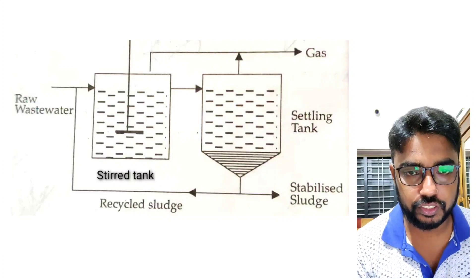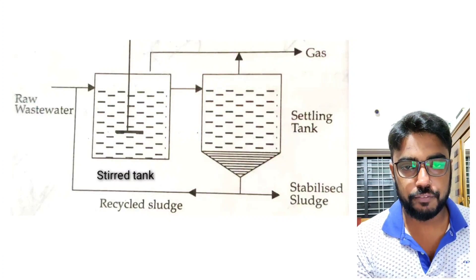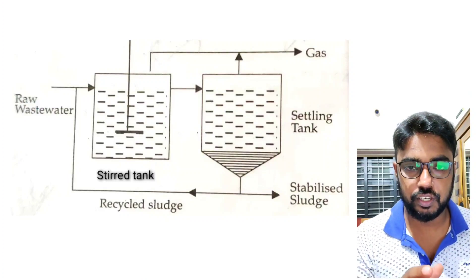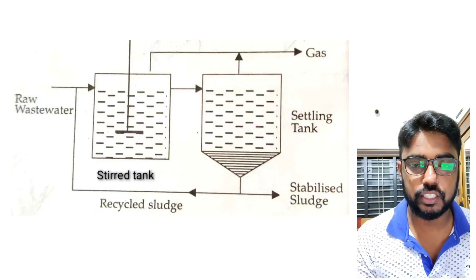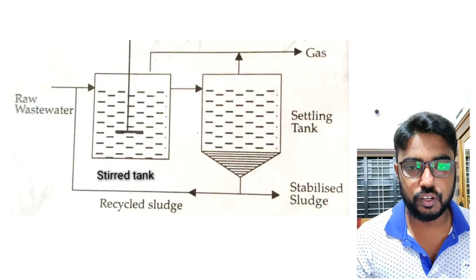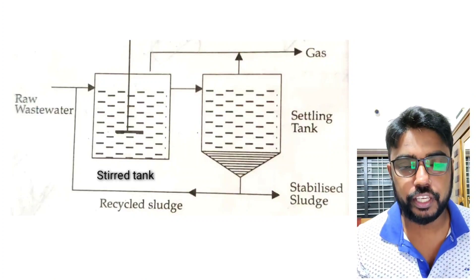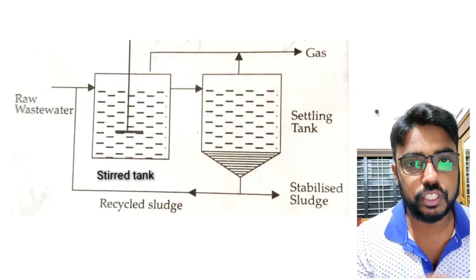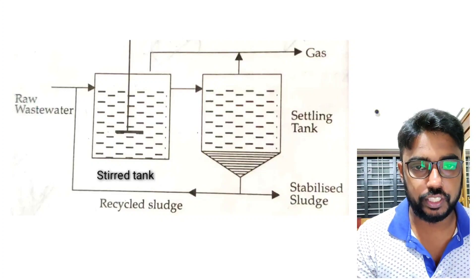This is the figure of contact digesters. You can see the effluent coming to the stirred tank. After complete stirring, the effluent is transferred into the settling tank. The gas is removed before settling. This is the anaerobic equivalent of the activated sludge process that is used in aerobic treatment.